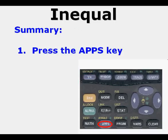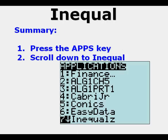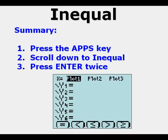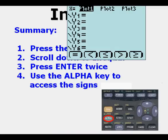And so to summarize, to use InEqual, we first press the APPS key, we scroll down to InEqual, wherever it happens to be on our calculator, then we press enter twice, which gets us to this view where we're able to use it now. Then we use it, and then we press the ALPHA key first to access those signs with the function keys inside the view screen.